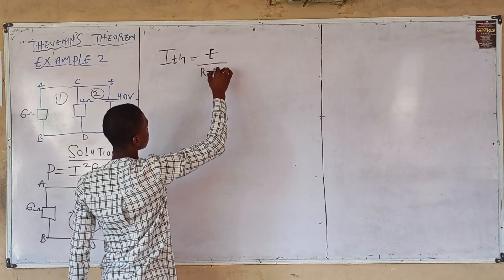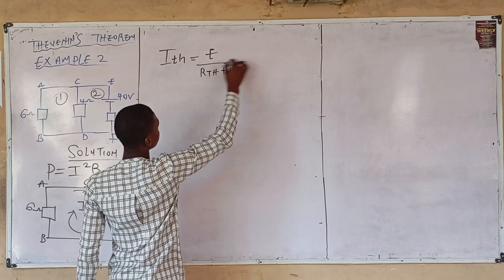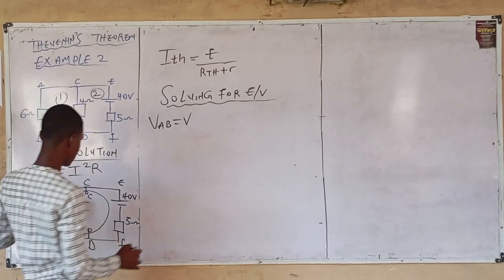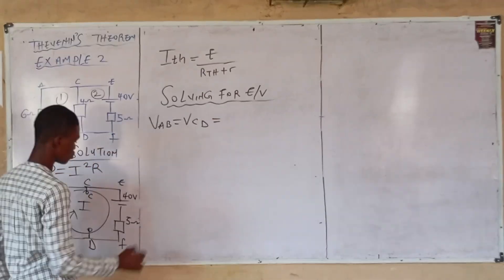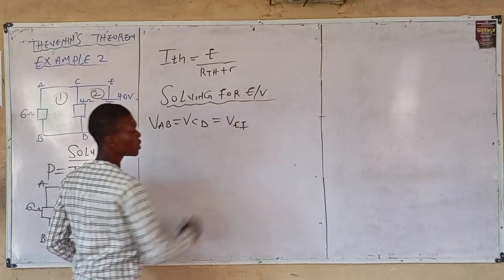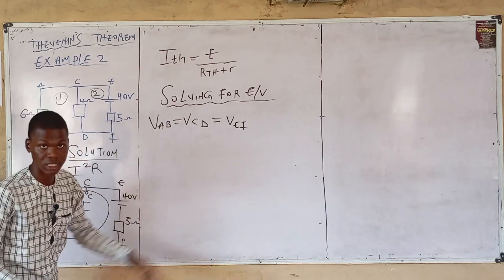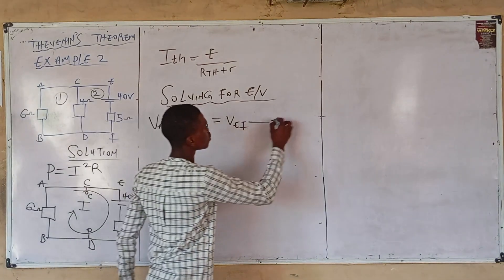For a parallel circuit, the voltages are equal — meaning the voltage at branch AB equals the voltage at branch CD, and also equals the voltage at branch EF. That is: V_AB = V_CD = V_EF. This is Equation 1. The voltage of the load resistor is V_CD.